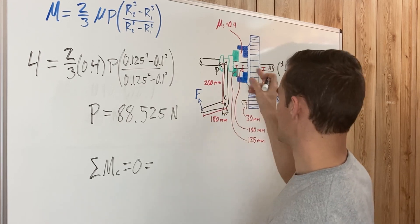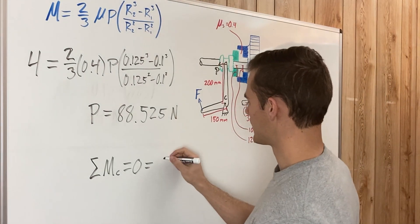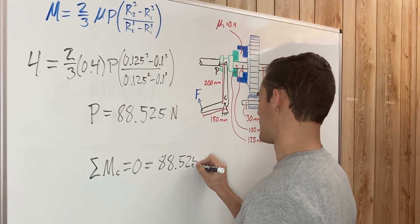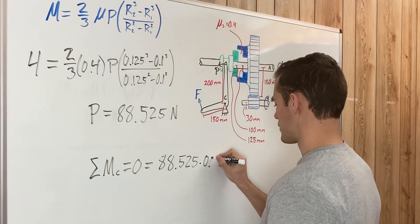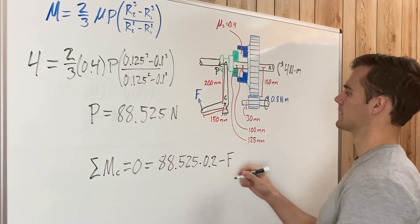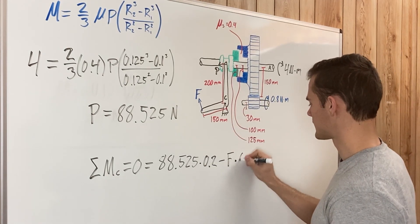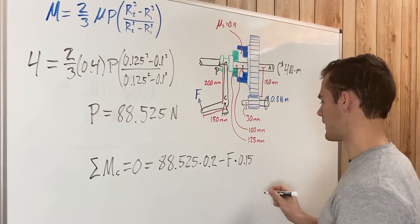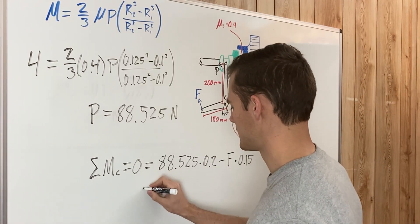Which is going to cause a counterclockwise rotation about point C, that is going to be positive for us, multiplied by its distance from C, which is 0.2 meters. And minus force F, because it is going to cause counterclockwise rotation about point C, multiply by its distance from point C, which is 0.15 meters.